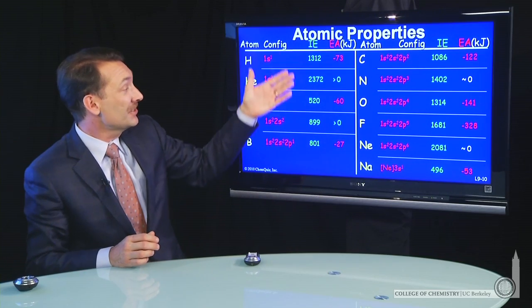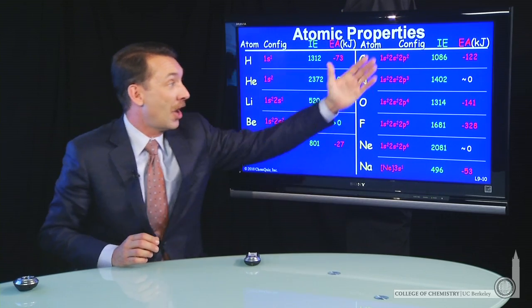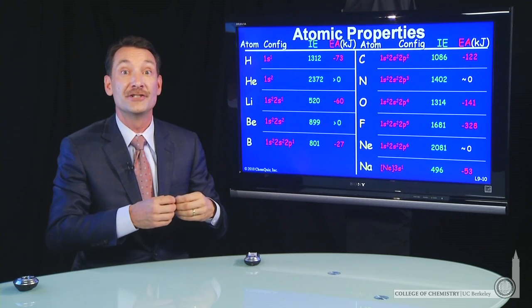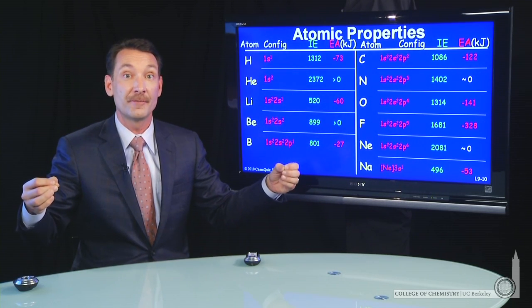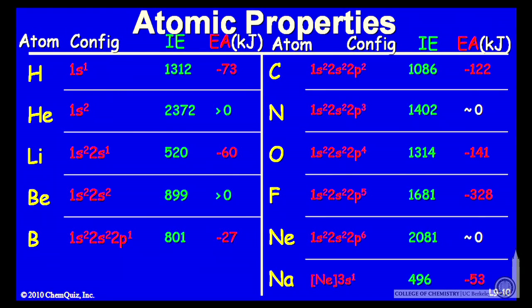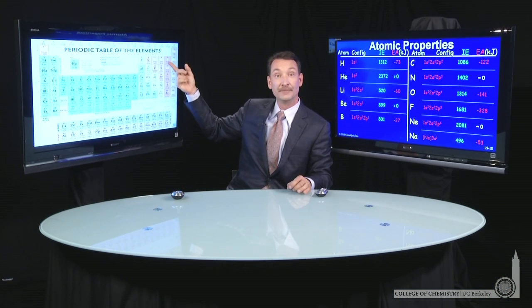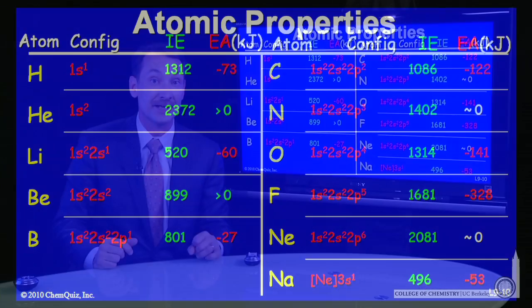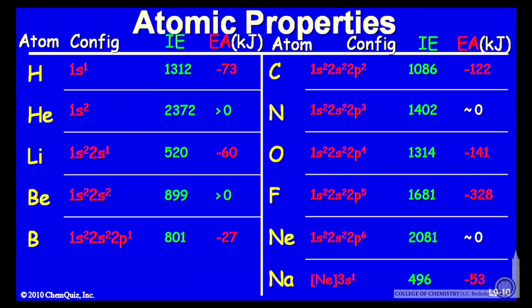The ionization energies are all positive — it always requires energy to pull electrons away from atoms. Going across the periodic table — carbon, nitrogen, oxygen, fluorine, and even neon — I can see a general increase in the ionization energy.